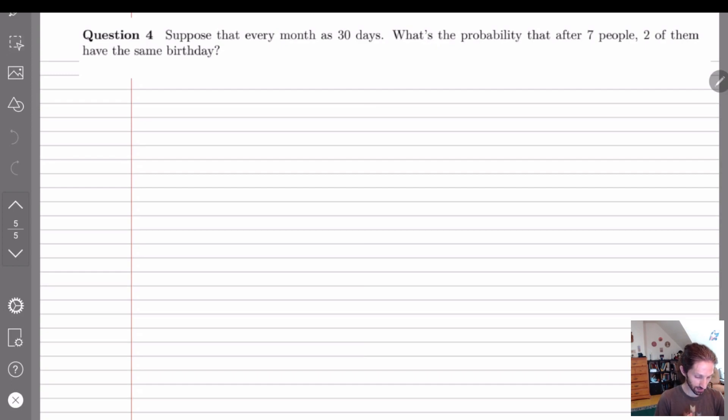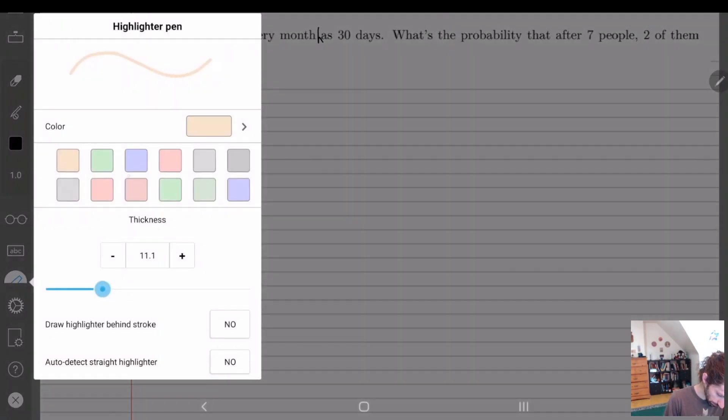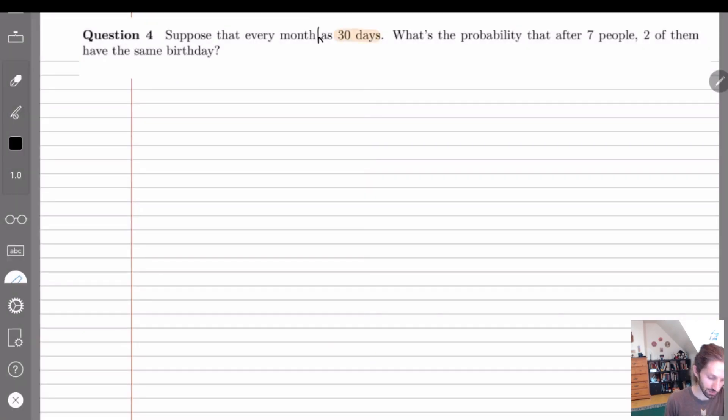So question four is asking suppose that every month has 30 days. Apparently I do not know how to spell has. It should be has 30 days.